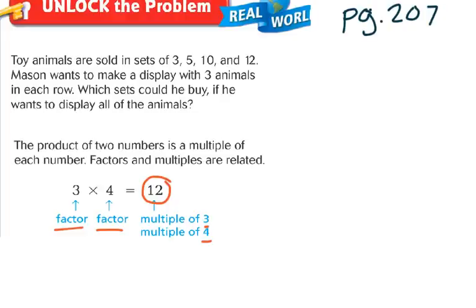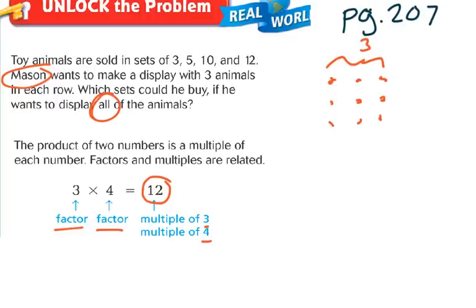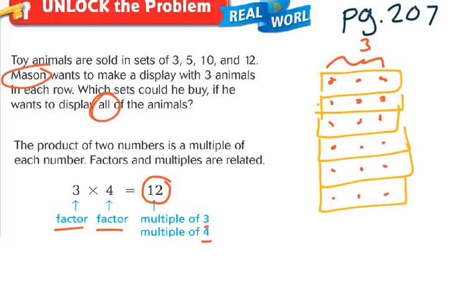What this problem is asking is: Mason wants to put animals on a shelf with 3 animals in each row, and he wants to use all of his animals — no animals left off a row. So we can buy 3, 6, 9, 12, 15, 18 — in all of these rows he has 3. We're counting by 3s because he wants all rows in sets of 3. We're finding our multiples of 3.